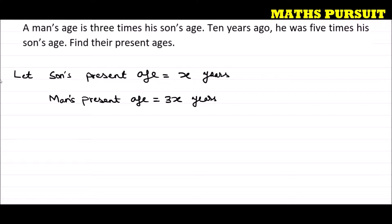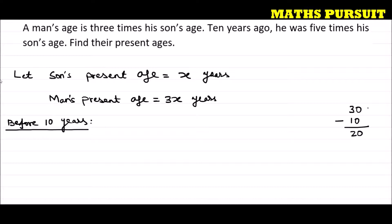Now, ten years ago — that means ten years before. What happened before ten years? For example, if my current age is thirty years, ten years before — that means minus ten — my age will be twenty years. If my present age is thirty years, ten years before my age will be thirty minus ten. I need to subtract ten from thirty to get my age ten years before, which gives twenty years.